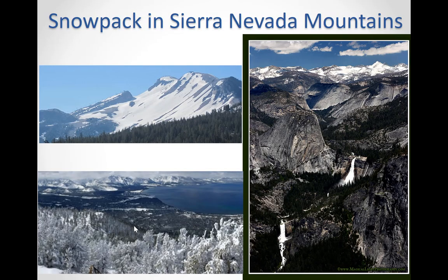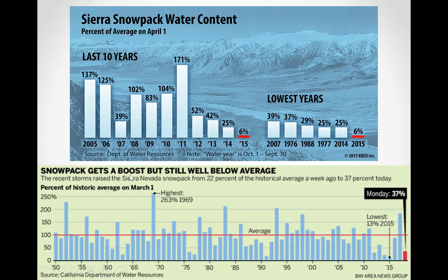One major internal source of water for the state is the snowpack in the Sierra Nevada mountains. Here we can see the Sierra Nevada mountains with snowpack during winter. The Sierra Nevada snowpack water content has been declining over time — from 2005 to 2015 there has been a progressive decline.